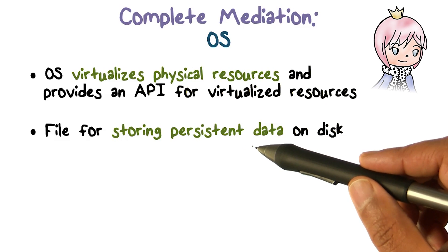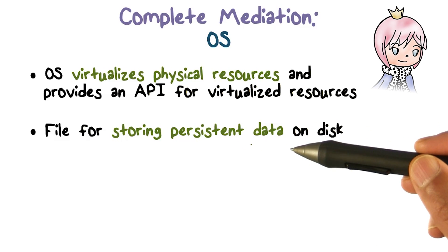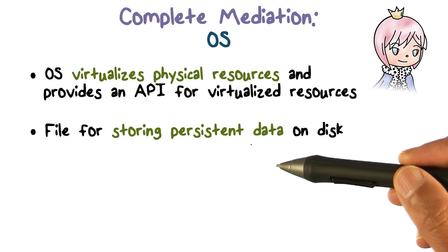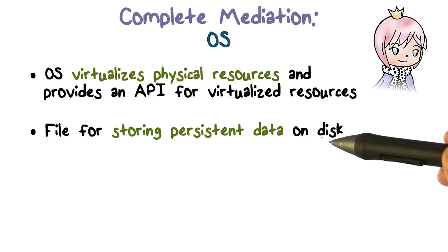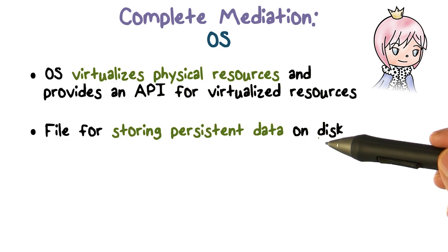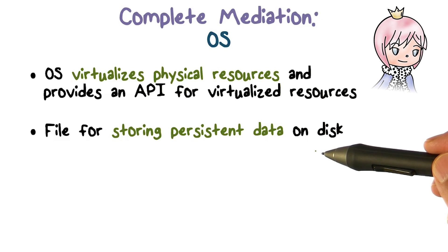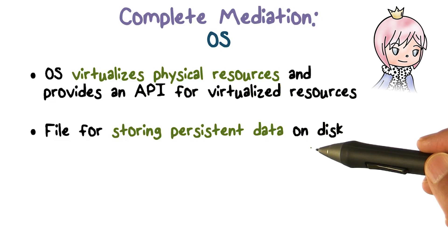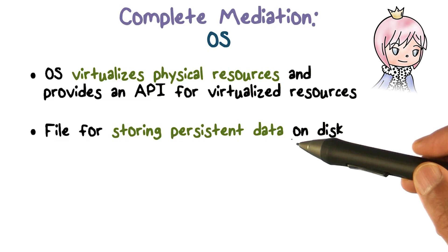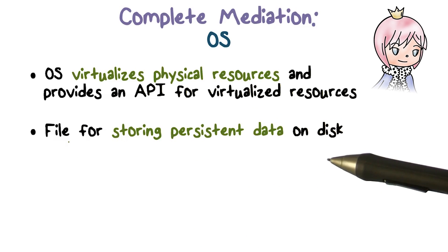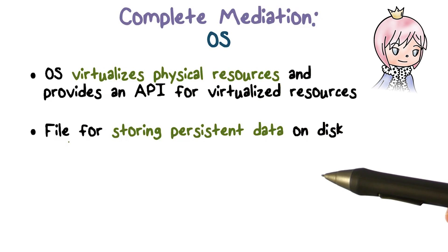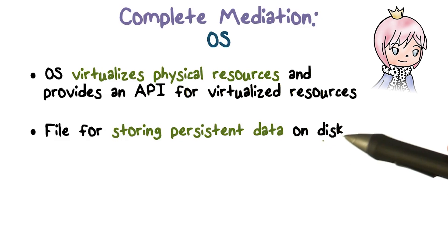An example of this is that for storing persistent data, we have file abstraction — the virtual resource for storing persistent data is a file. So you don't access a disk block. The operating system does disk I/O and schedules requests to read blocks, services interrupts, and can interact with the disk controller through privileged instructions. But you cannot from user space — you can only ask for access to files: opening them, reading them, writing them, and things like that.